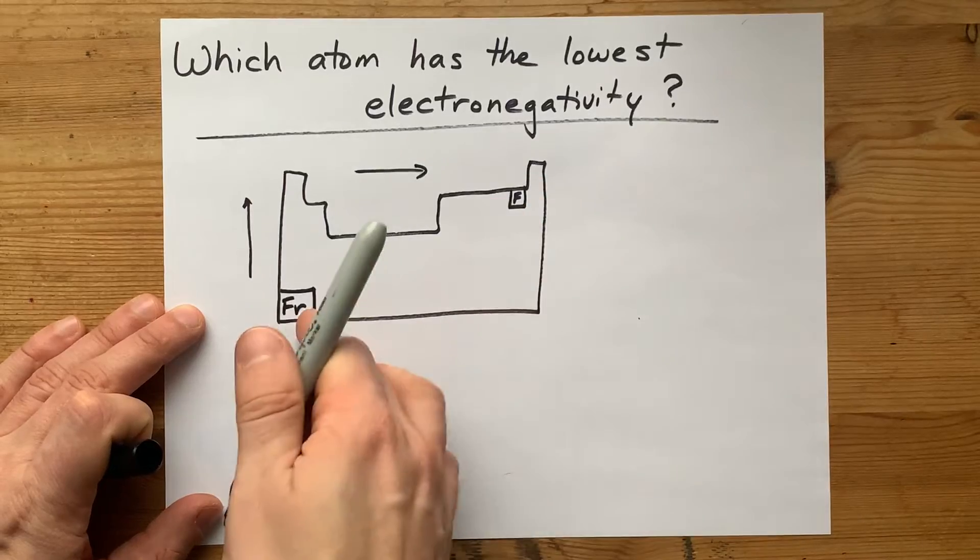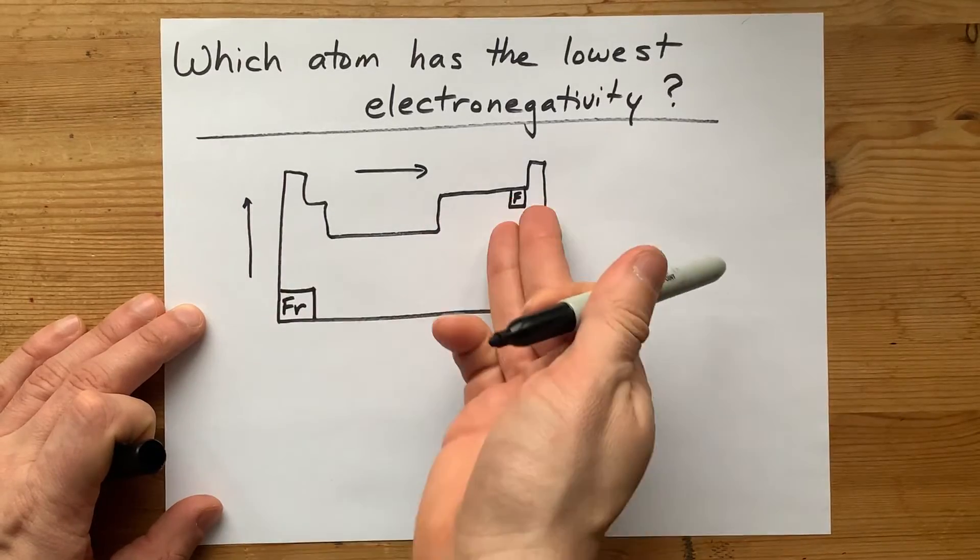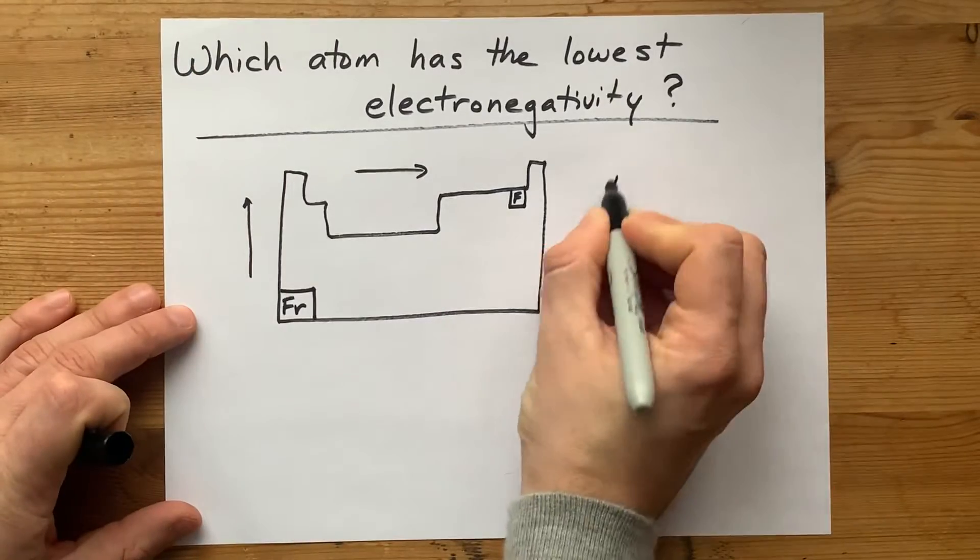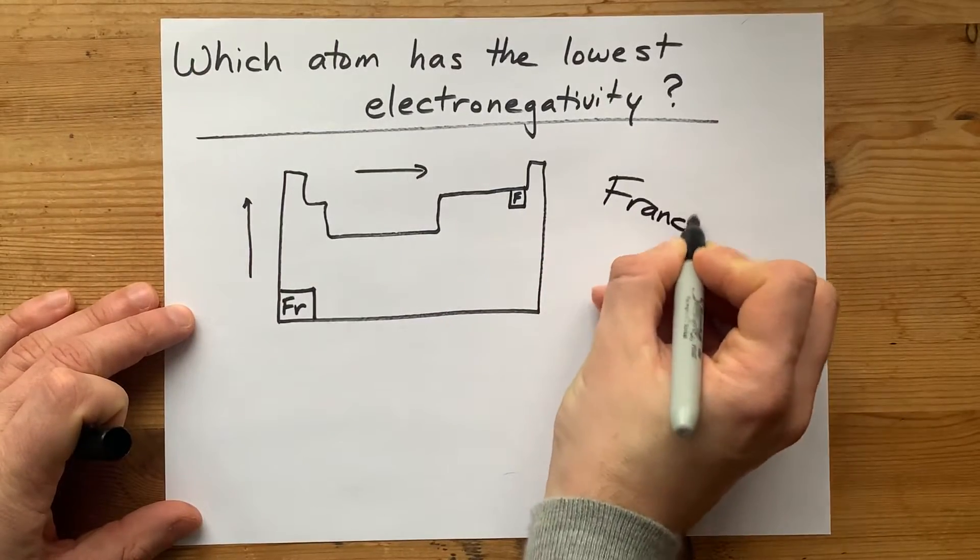The atom that is in the bottom left of the periodic table, furthest away from fluorine. The answer your teacher is probably looking for is francium.